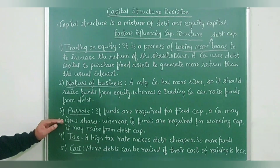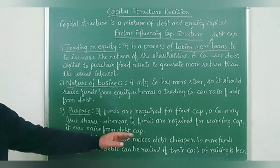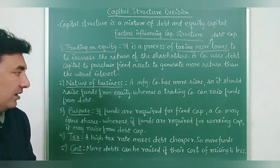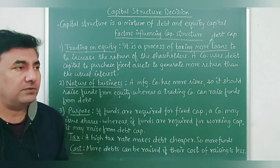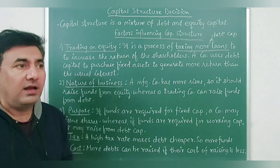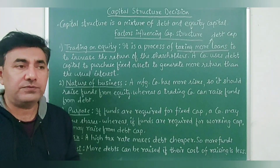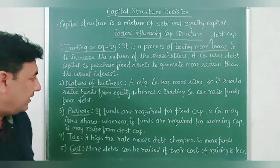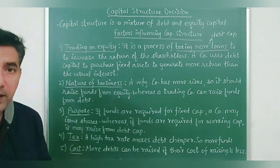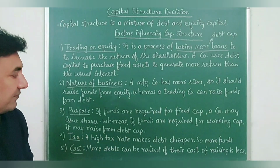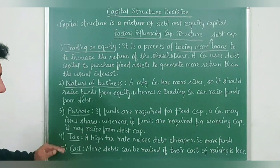The third factor is purpose. If funds are required for fixed capital, a company may issue shares, whereas if funds are required for working capital, it may raise from debt capital. Fixed capital is used for buying machines and fixed assets, so the company raises funds through equity share capital. If a company has to meet working capital or day-to-day operating expenses, then it may raise funds from debt capital.